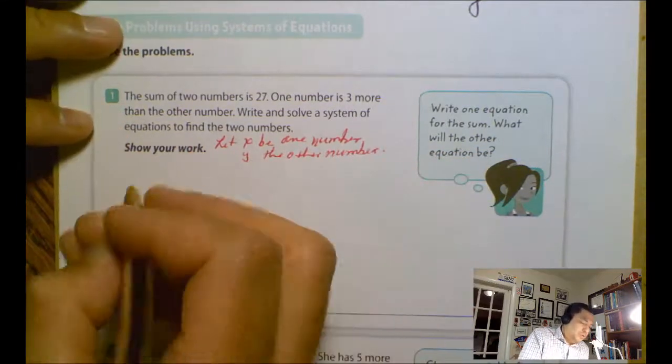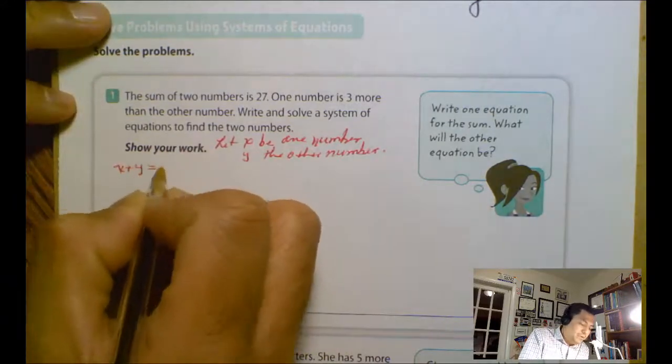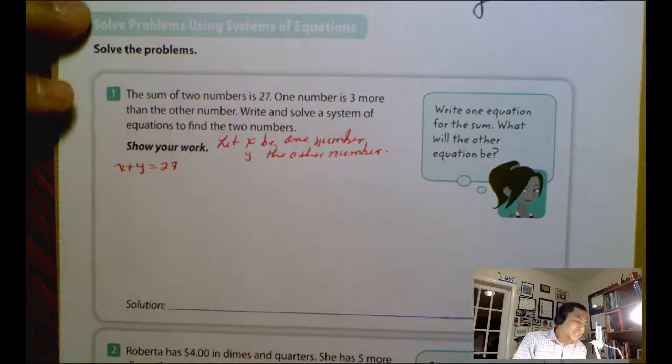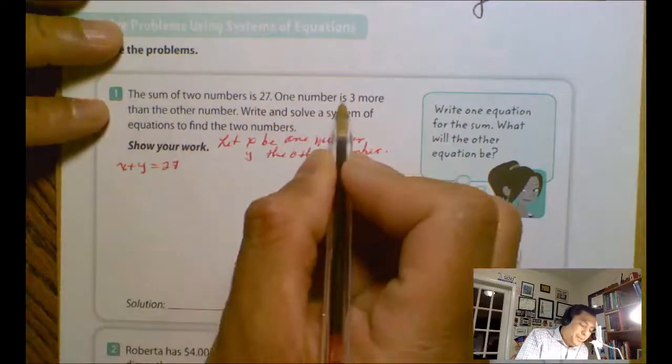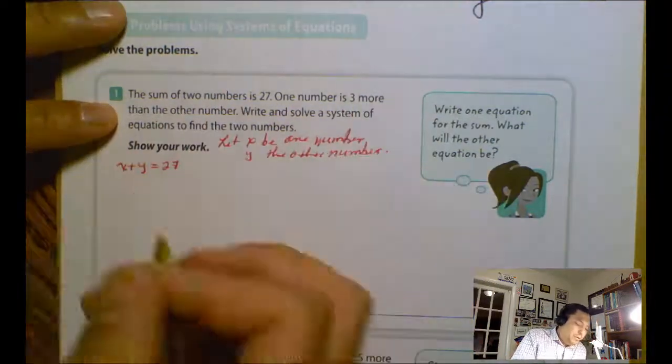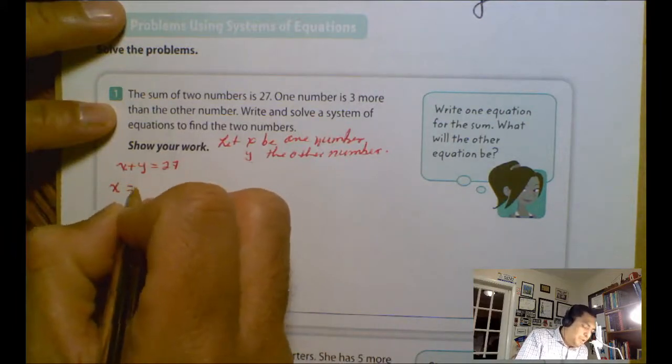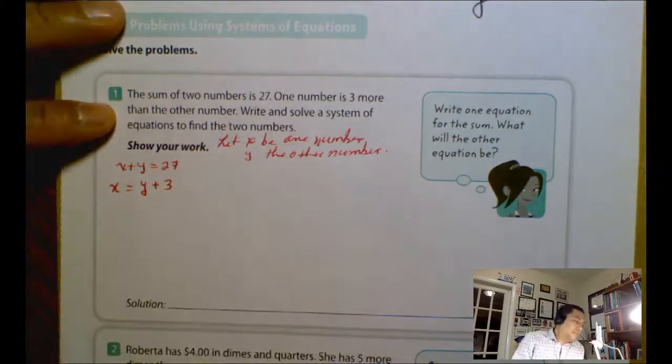The first equation: the sum of two numbers means x plus y equals 27. That's the addition of two numbers equals 27. The second equation will be one number is three more than the other number. So I'm going to say x equals y plus 3. That's the second equation.